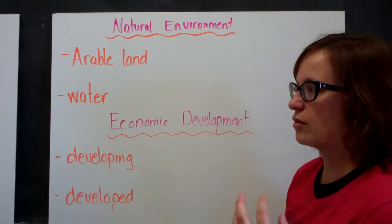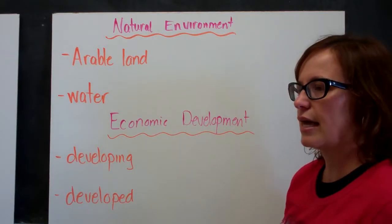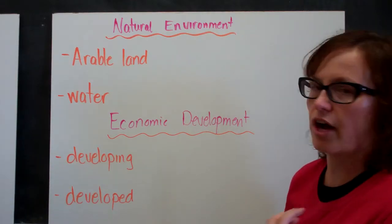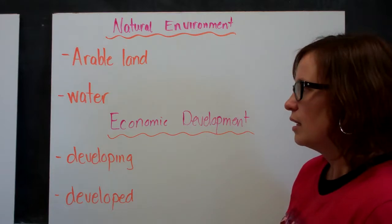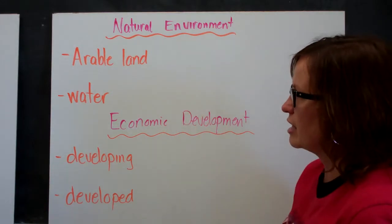Arable land is land that can be used. Can it be used for farming? Are there resources available? Can it provide shelter? So is the land usable? That's what it means by natural environment.